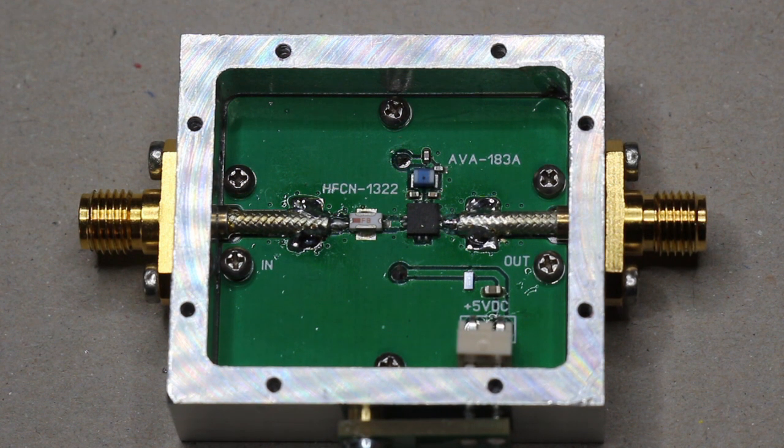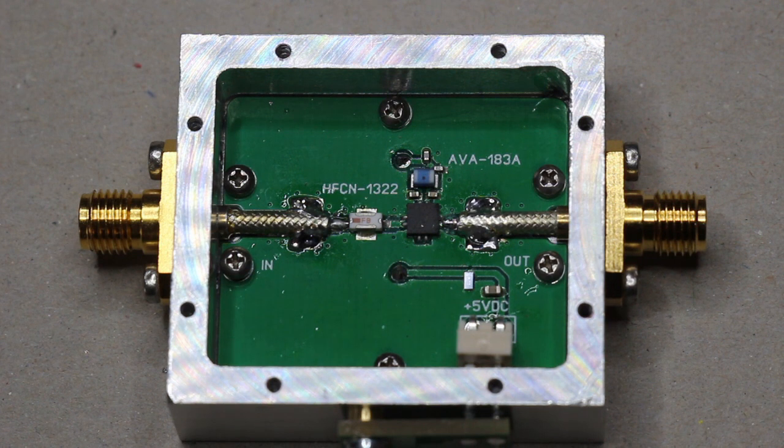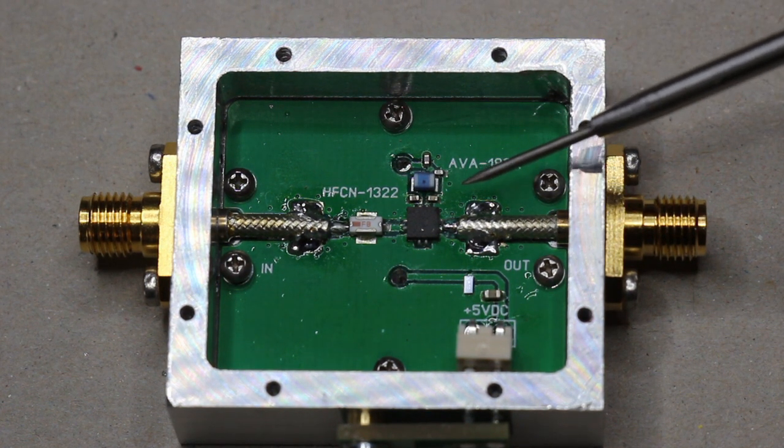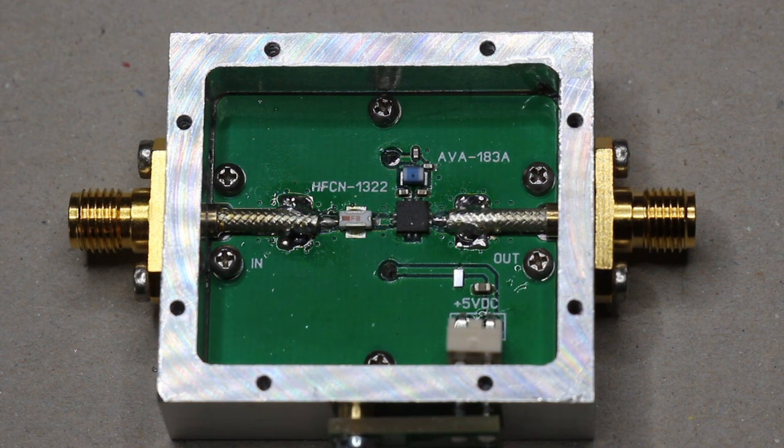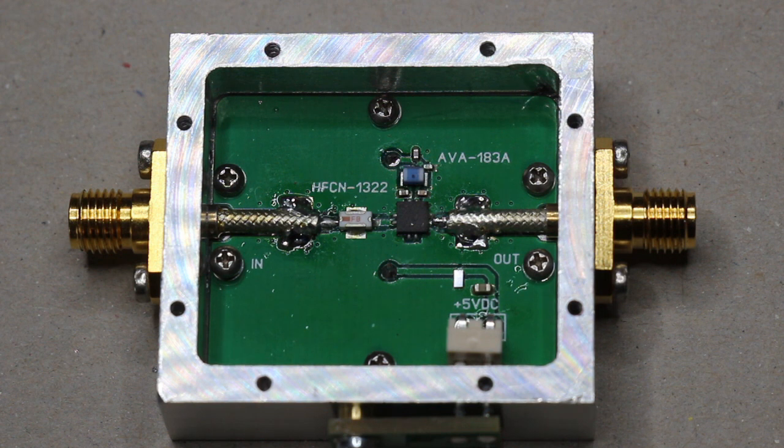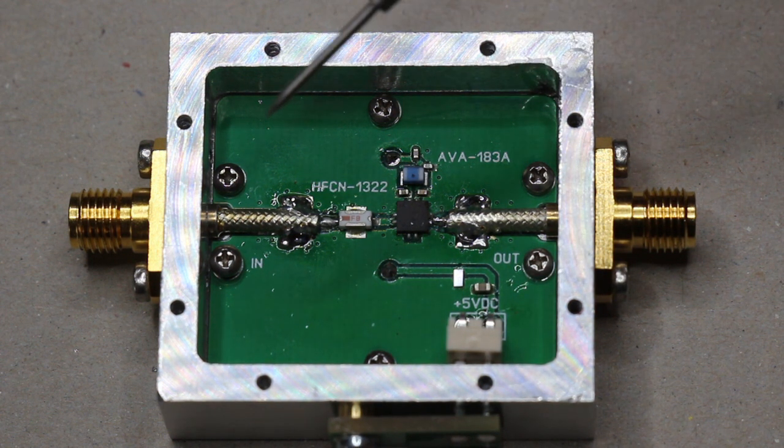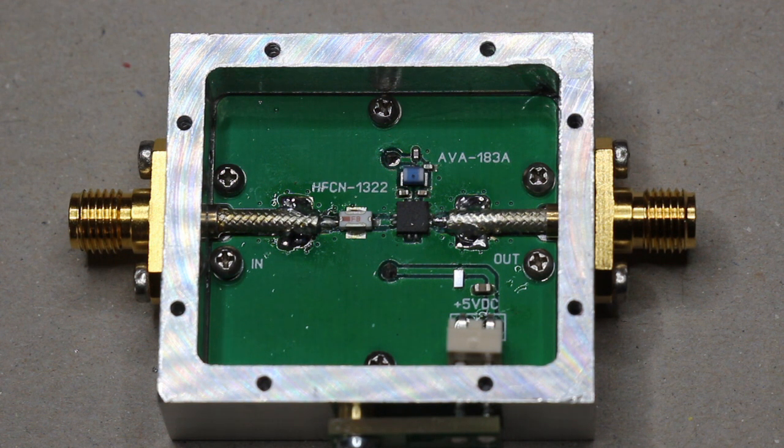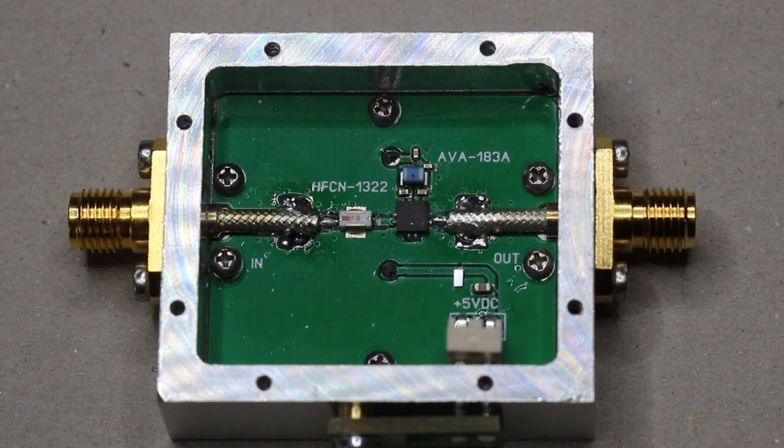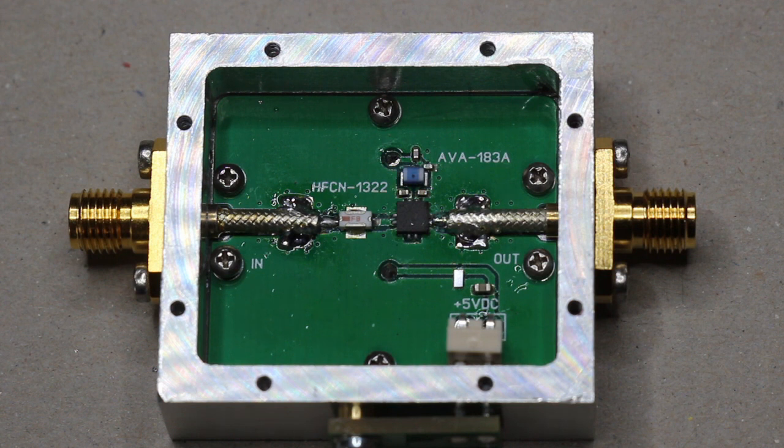It has a nominal insertion loss of 1.39 dB at 16 gigahertz. This is the amplifier itself, the AVA-183A, also from Mini Circuits. It works from 5 to 18 gigahertz and has a nominal gain of 13.6 dB at 16 gigahertz. I have also used here at the input and output semi-rigid coaxial cable to minimize the losses in the FR4 substrate.